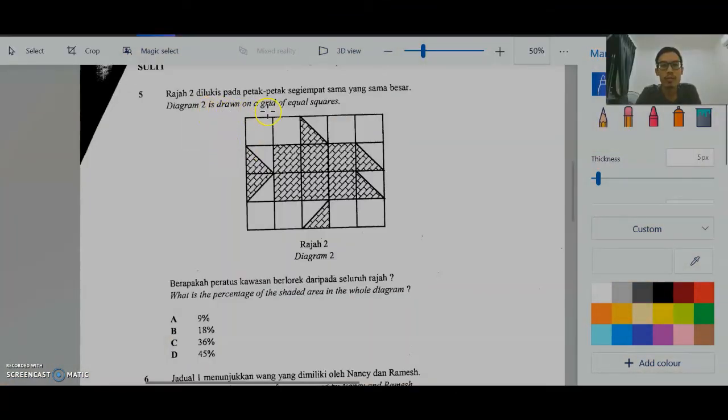Question 5. This diagram is drawn on a grid of equal squares. Semua dilukis pada petak-petak setiap panjang sama. Berapakah peratus kawasan berlorek? What is the percentage of the shaded area? So, nak cari peratus kawasan berlorek, letak pecahan. Berapa yang berlorek per jumlah petak? Nak cari peratus kan? Tak harap 100 peratus. So cari berapa yang berlorek? How many boxes are shaded? Complete squares. We can see that they are 1, 2, 3, 4, 5, 6. There are 6 squares here.